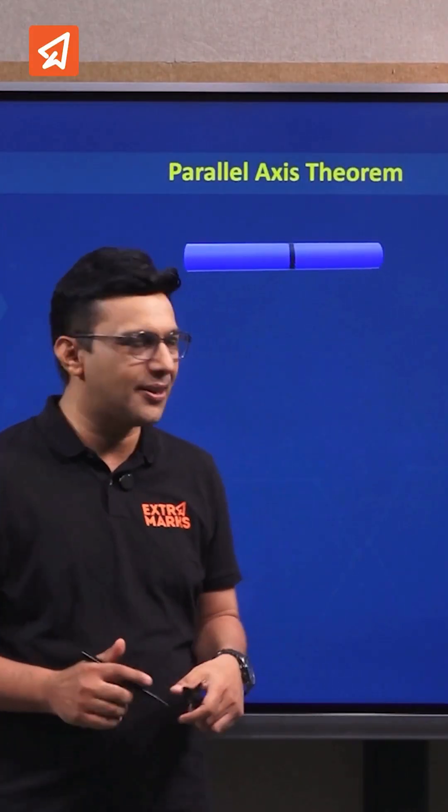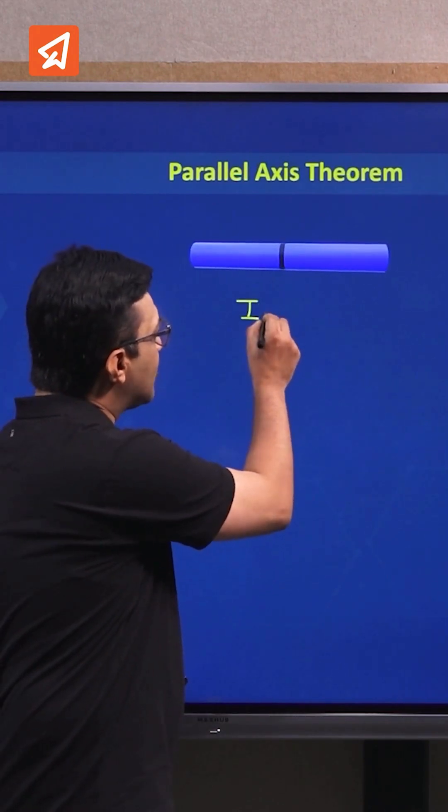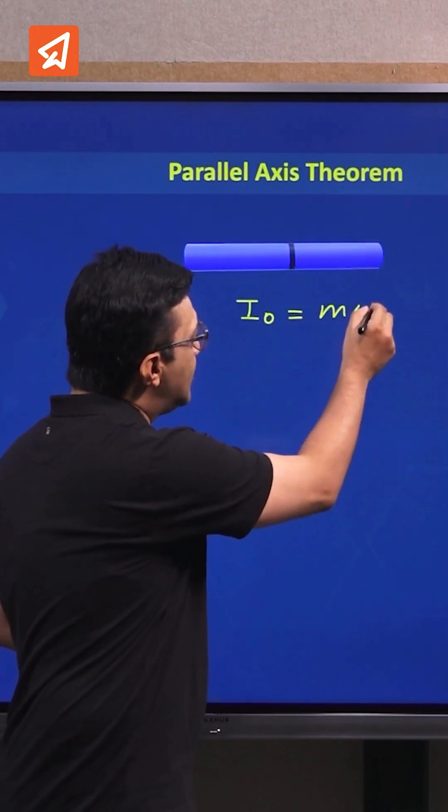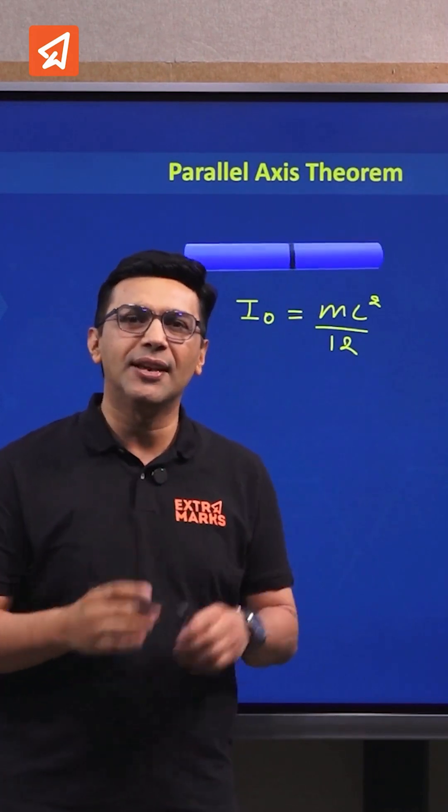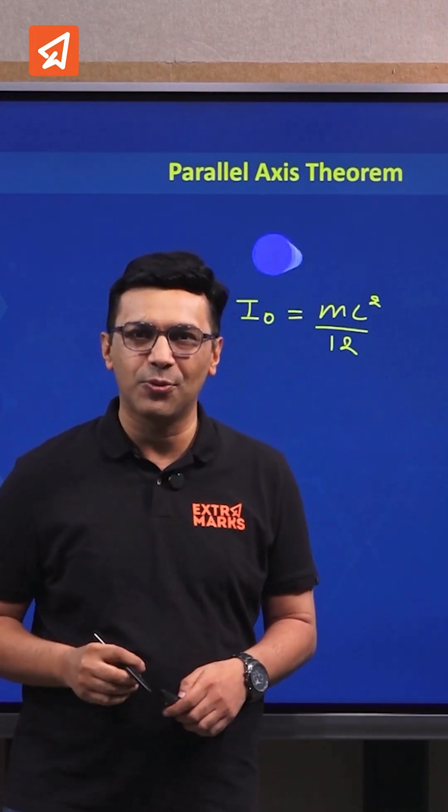We have a rod here which is rotating about its central axis. The moment of inertia about this central axis is given by mL²/12. What will happen if we pass a parallel axis which is parallel to its central axis? We have to calculate the moment of inertia about it.